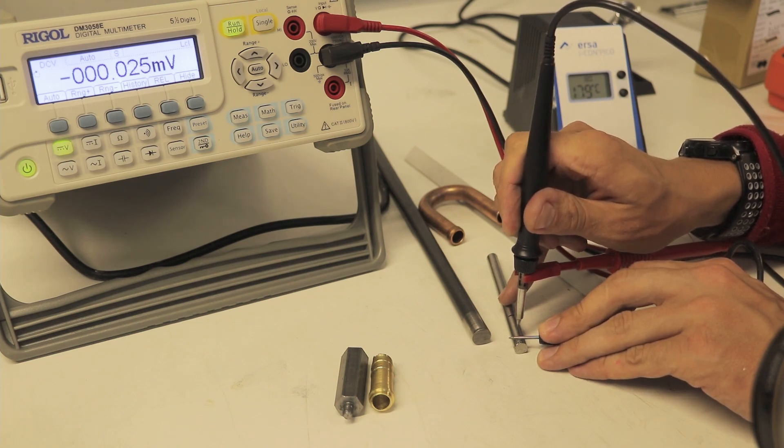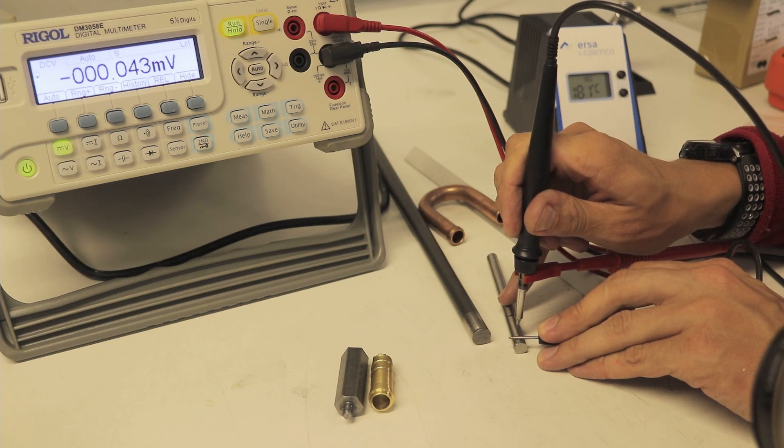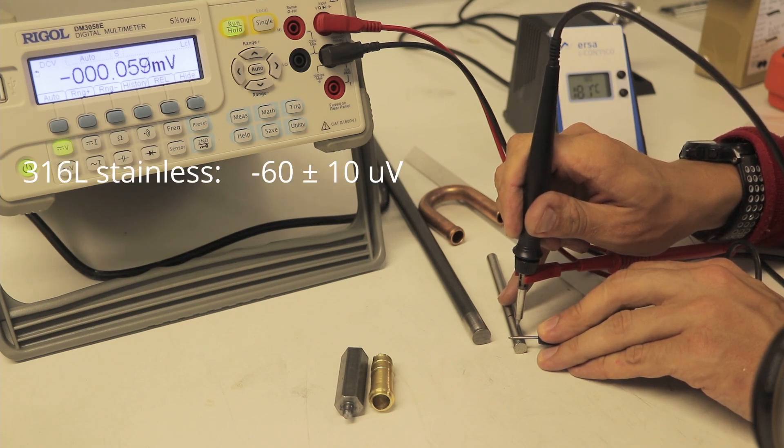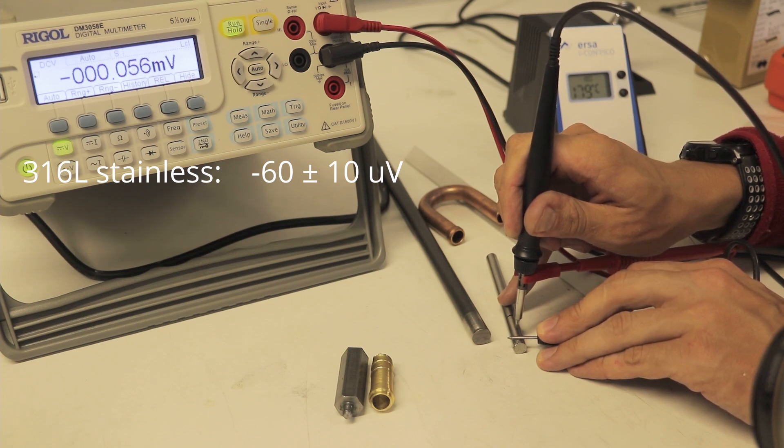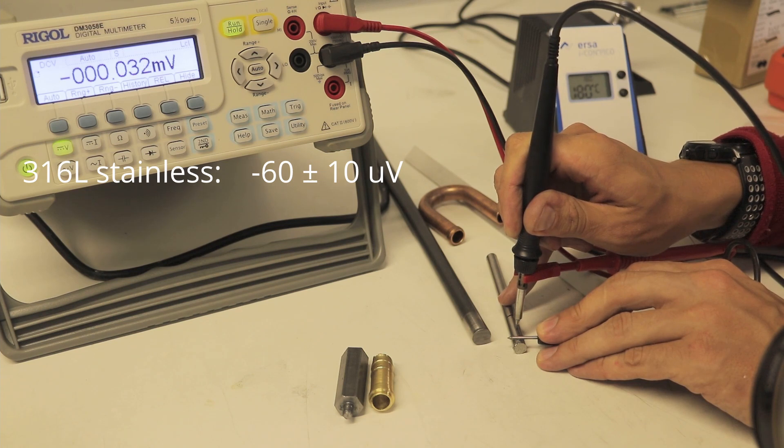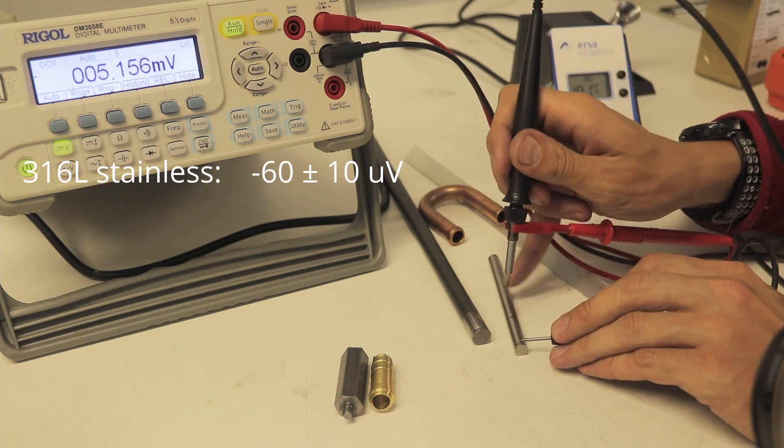What I am doing now, I am just holding a bit of stainless steel with the probe and poking the soldering iron. And you can see, at the region about minus 70 microvolts for a bit of stainless steel.